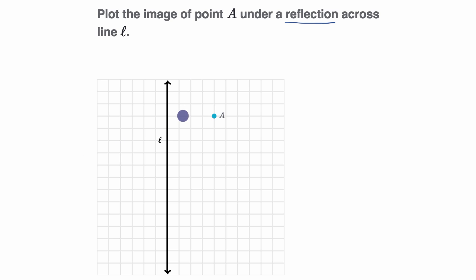Well, one way to think about it is point A is exactly one, two, three, four units to the right of L, and so its reflection is going to be four units to the left of L. So if we go one, two, three, four, that would be the image of point A.